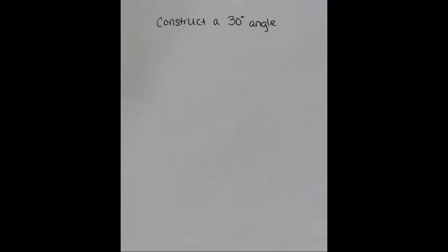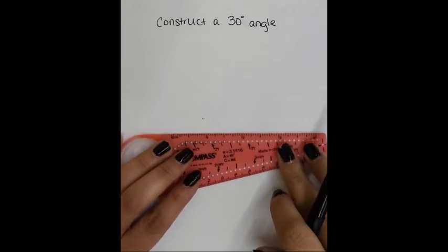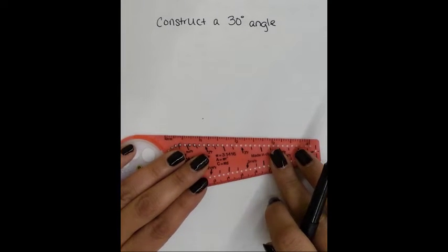So in order to construct a 30 degree angle, this is a combination of an equilateral triangle and an angle bisector. So the first thing you want to do is construct an equilateral triangle.